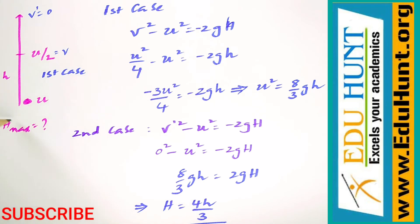Now come to the second case. Here the velocity is v'. At maximum height, the velocity becomes 0, so v' = 0. So 0² - u² = -2g times H_max. I took it as capital H.